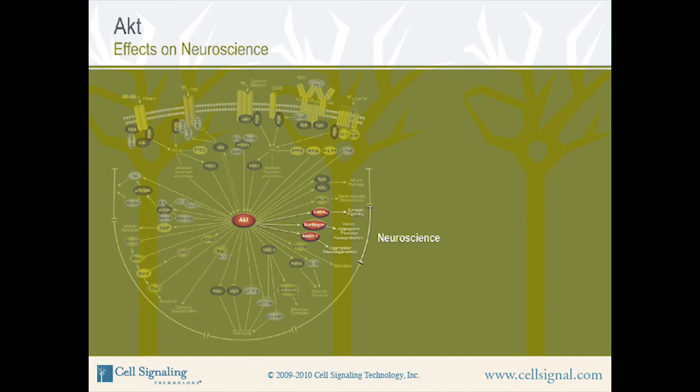AKT has also been shown to play a role in several neurodegenerative diseases, such as Alzheimer's and Huntington's disease, including during periods of programmed cell death that occur as part of normal brain development. One of AKT's targets in neuroscience is Huntington. Huntington's disease is a neurodegenerative disease caused by the accumulation of polyglutamine repeats within the Huntington protein. AKT phosphorylates the Huntington protein at serine-421, which can partially counteract the toxicity that results from the expanded polyglutamine tract.